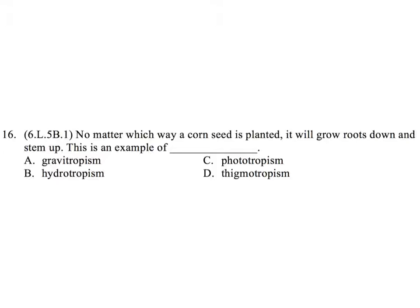Question 16. No matter which way a corn seed is planted, it will grow roots down and stem up. This is an example of: A. Gravitropism. B. Hydrotropism. C. Phototropism. D. Thigmotropism.